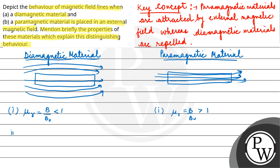The second property is magnetic susceptibility, which is equal to 1 minus μr. For diamagnetic material, this value is negative. In the case of paramagnetic material, the susceptibility is positive.